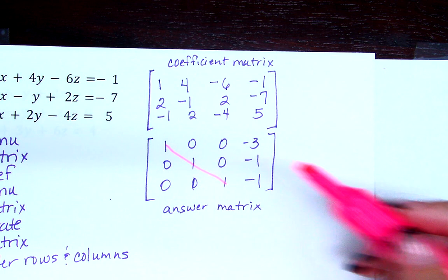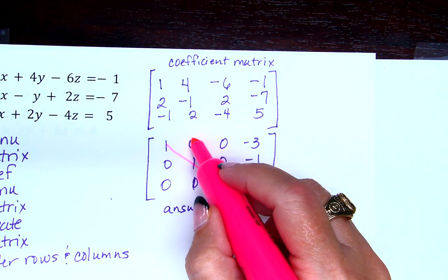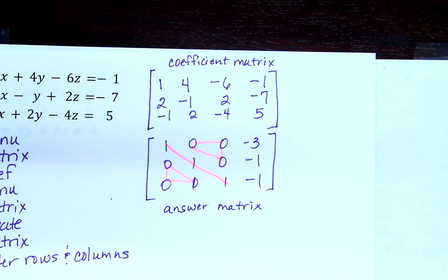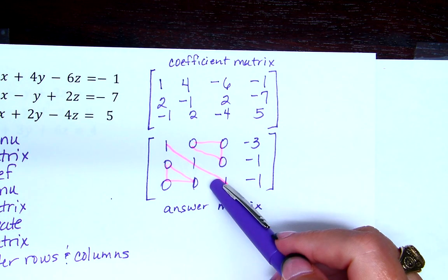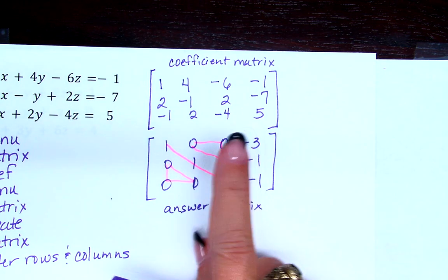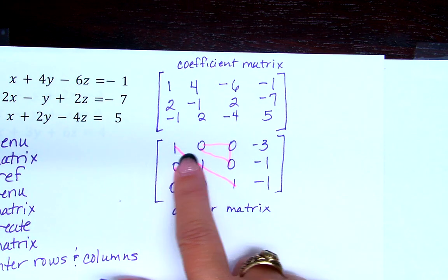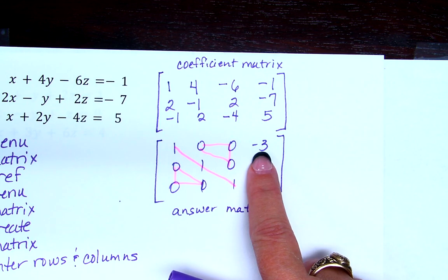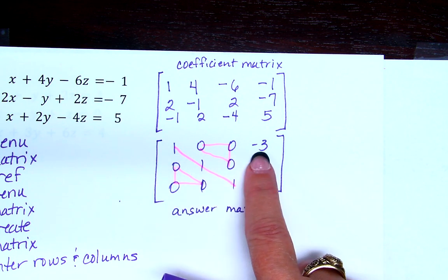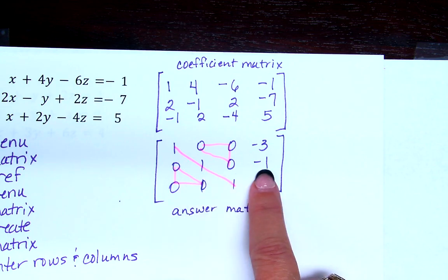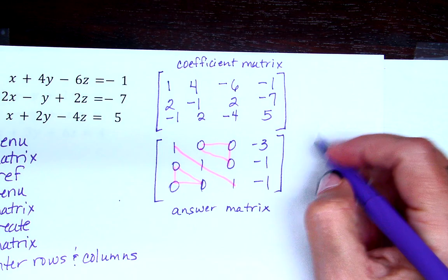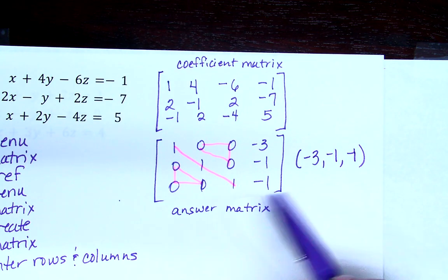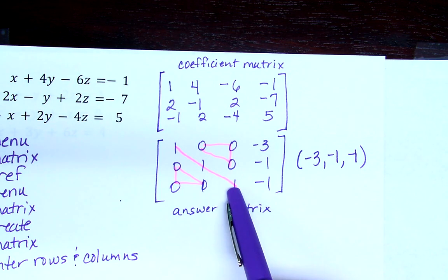Now you need to check and make sure that that is a diagonal of ones. And you need to make sure that this is a triangle of zeros and that this is a triangle of zeros. And if you know you have a diagonal of ones and two triangles of zeros, think about it for a second. If I translate this back into equation form, what is this first row saying? 1x plus 0y plus 0z equals negative 3. Isn't that telling you that x equals negative 3? What's this row telling you? y equals negative 1 and z is negative 1. So isn't it telling you the answer is negative 3, negative 1, negative 1? It's only saying that if you have a diagonal of ones here and two triangles of zeros.